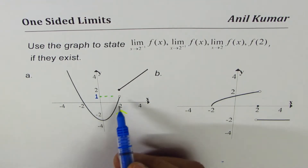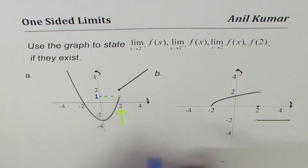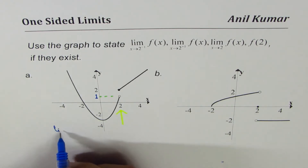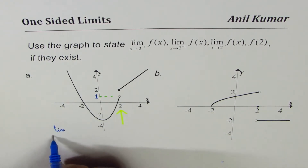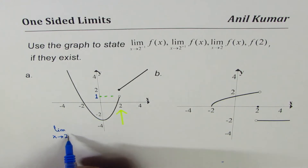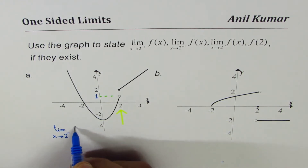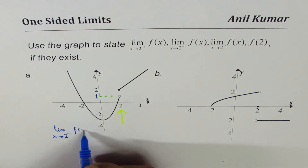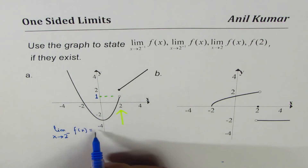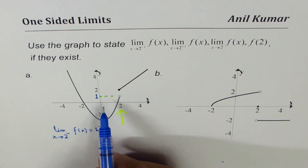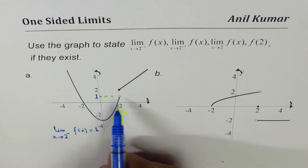So in this particular case, we can write that the limit when x approaches 2 from the left side of the function f of x is equal to 1. That is how you find a one-sided limit from the graph.